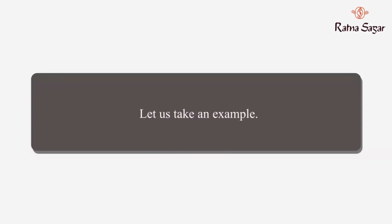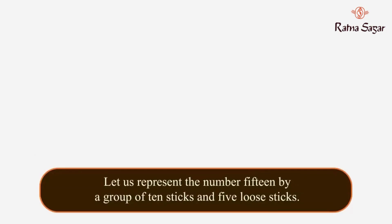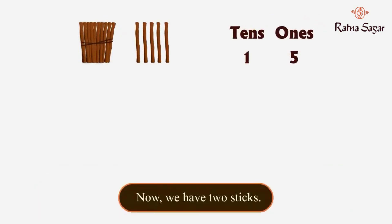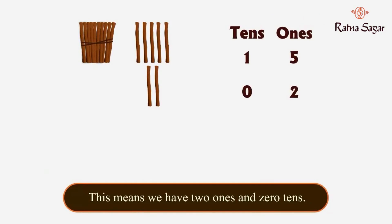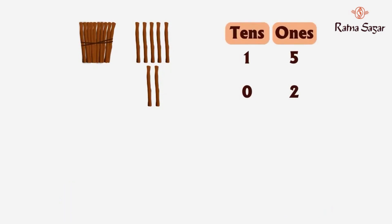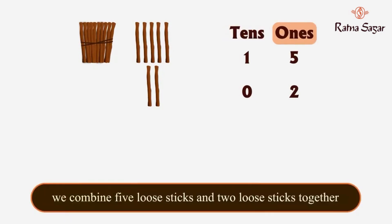Let us take an example: what is 15 plus 2? Let us represent the number 15 by a group of 10 sticks and five loose sticks. Now we have two sticks, which means we have two ones and zero tens. First we add the ones and then the tens. To add the ones, we combine five blue sticks and two loose sticks together.